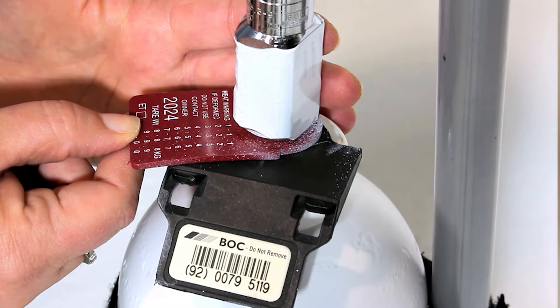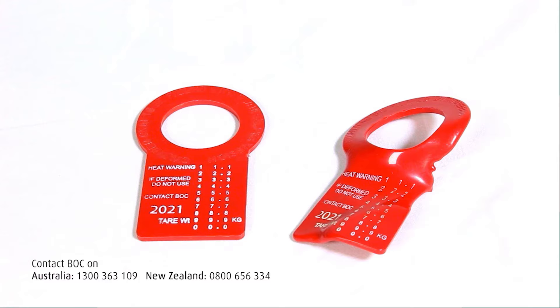Thirdly, check the plastic heat tag for deformation. If it looks melted, then it has been exposed to heat and should not be used. And contact BOC to report the issue.